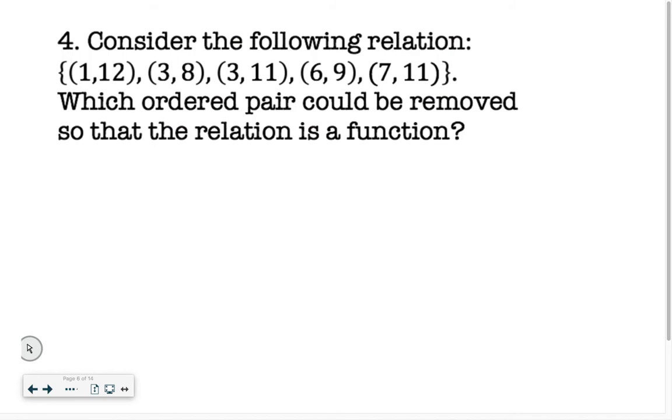And last one, consider the following relation. Which ordered pair could be removed so that the relation is a function? So remember, our x values cannot repeat. So are there any repeating 1s? No. Are there any repeating 3s? Yes, these two repeat. Are there any repeating 6s? No. Are there any repeating 7s? No. So 3s are what we're going to need to get rid of. But which one would you get rid of in order for you to have a function?